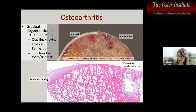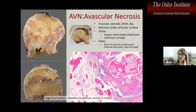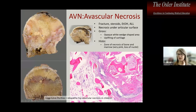Recall osteoarthritis: grossly the cartilage is eburnated or worn away. Histologically you see a transition from articular cartilage showing cracking, to absolute loss or eburnation, to subchondral cysts and sclerosis. Avascular necrosis can be seen in the setting of arthritis or in patients who have undergone steroid use.